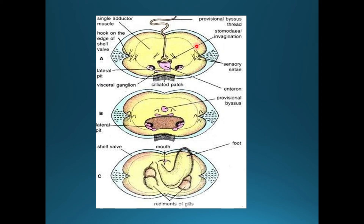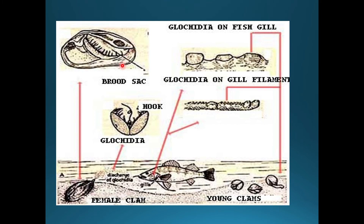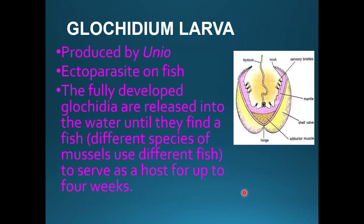The glochidium larva has a shell, and you can also see the byssus and provisional byssus threads. These are provisional byssus threads. This is the foot, and these are rudiments of gills. These are the inhalant siphons and the deep glands of the glochidium. The glochidium is discharged from the brood sac and goes to the fish's gills. The glochidium larva is an ectoparasite on fish for up to four weeks.